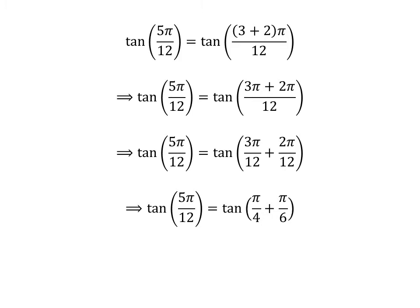Cancelling out the common factor in the numerator and the denominator gives us tangent of 5 times pi upon 12 is equal to tangent of pi upon 4 plus pi upon 6.